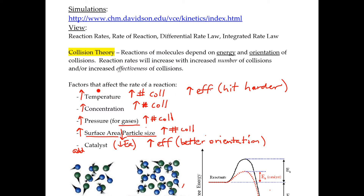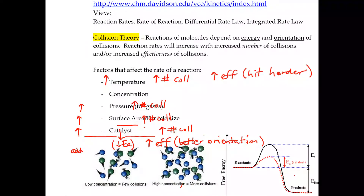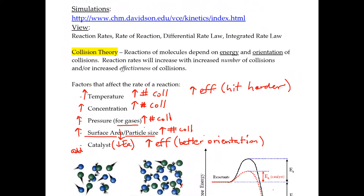Temperature is definitely the factor that has the biggest impact, and there's a general rule with temperature: if you increase the temperature by 10 degrees Celsius you're pretty much going to double the rate — approximately double the rate for a 10°C increase. That's just a general rule. If you look at the diagrams at the bottom of the page, you'll see that they reinforce what we were saying. If you have more particles in a sample you're going to have more collisions, so there's going to be a faster rate.